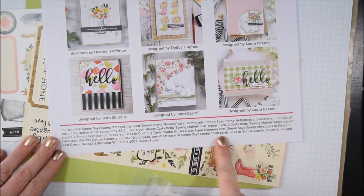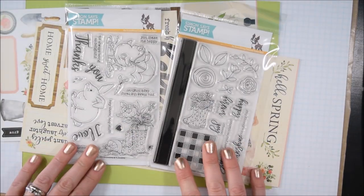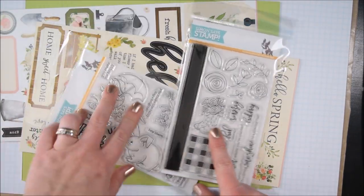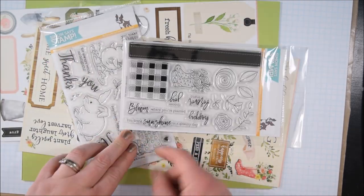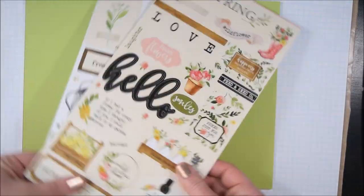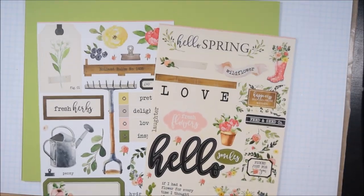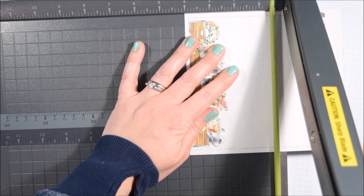As far as I understand, these are exclusive to the kit and not available otherwise. There's also a three-pack of Simon Says Stamp pre-scored cardstocks in cream, tonic glitter gloss aqua shimmer pen, and envelopes from Simon Says Stamp in metallic lavender, khaki woodgrain, and cotton candy. Plus a sheet of Nino Solar White 110-pound cardstock, 100-pound Desert Storm, Simon Says Stamp cotton candy green apple, and green leaf cardstock.